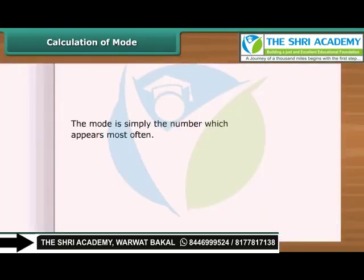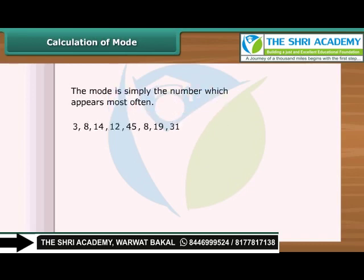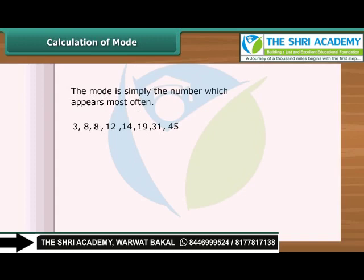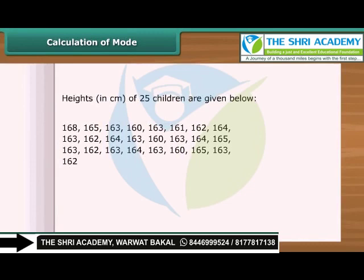The mode is simply the number which appears most often. See this example — we have a few numbers here. How can we find out the mode? To find the mode, we need to first put the numbers in order, then count how many of each number, and see which number appears most often. In this case, 8 appears 2 times, so the mode is 8. Now look at this data showing the height of 25 children in a class. Let us find out the mode of their heights.